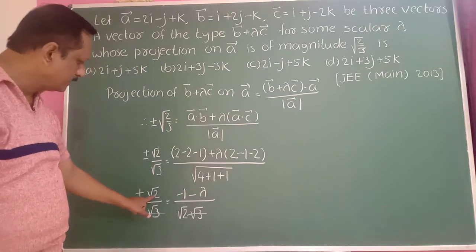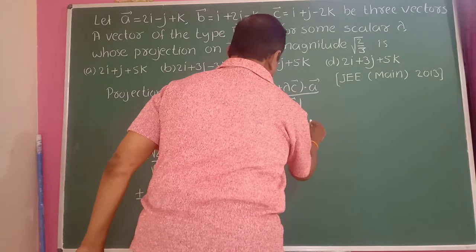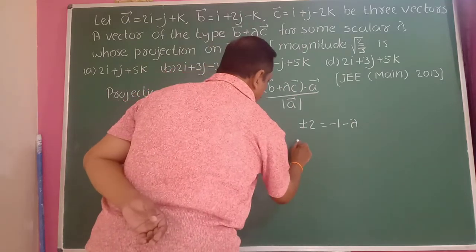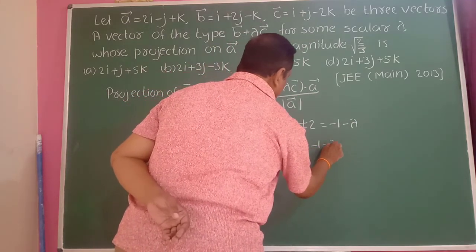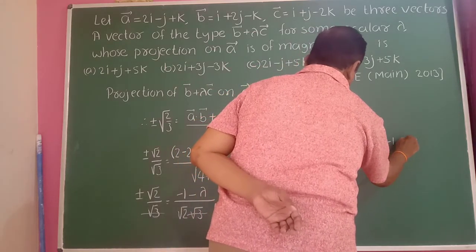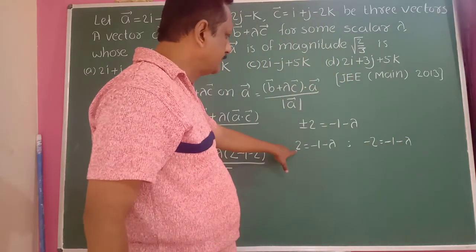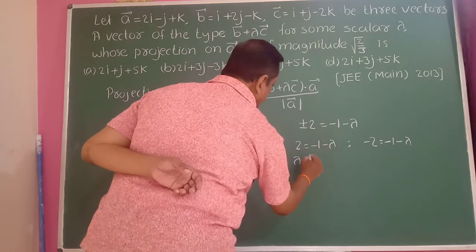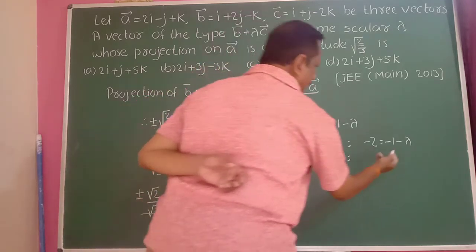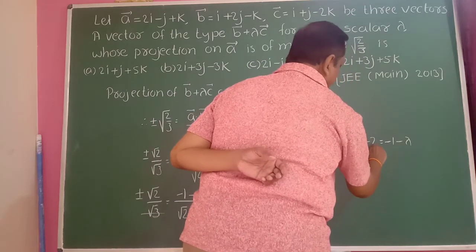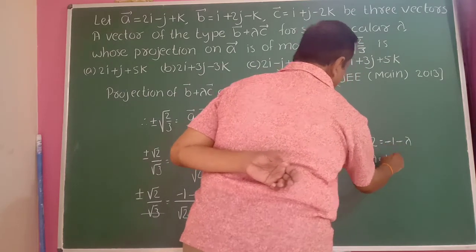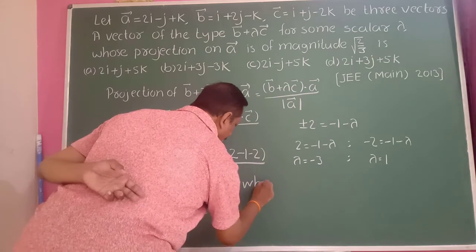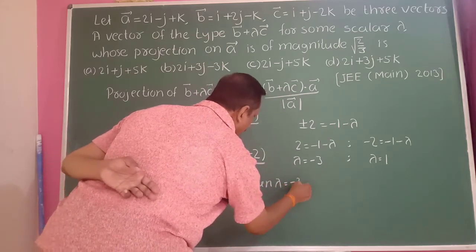So plus or minus 2 equals minus 1 minus lambda over 2, i.e., minus half lambda. Taking the plus case: 2 equals minus 1 minus half lambda, giving lambda equals minus 6. Taking the minus case: minus 2 equals minus 1 minus half lambda, giving 2 minus 1 equals 1, so lambda equals minus 3 when the plus sign is used.